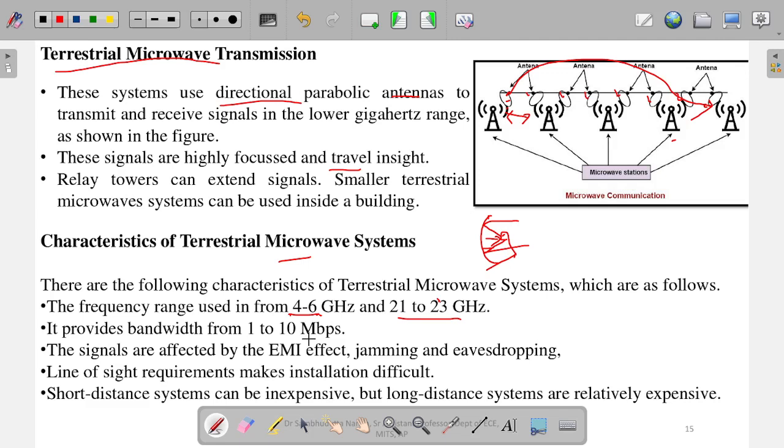The signals are affected by the EMI—electromagnetic interference. Because of other electromagnetic waves, these waves can be interfered with or disturbed in jamming and eavesdropping. What is jamming? You might have seen in movies that they use a device and no mobile signal comes. That is what jamming is. The signals can be blocked.